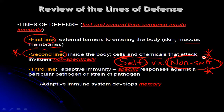Self versus non-self is very important. Your second line of defense — the cells and chemicals involved — has to be able to distinguish between self and non-self so it doesn't wind up attacking and destroying your own tissues. The major way we talked about doing that is by recognizing PAMPs on the surfaces of microbes and binding those with pattern recognition receptors on the surfaces of neutrophils and macrophages. Many of the chemicals involved also specifically target various types of pathogens while leaving the cells of our body alone.